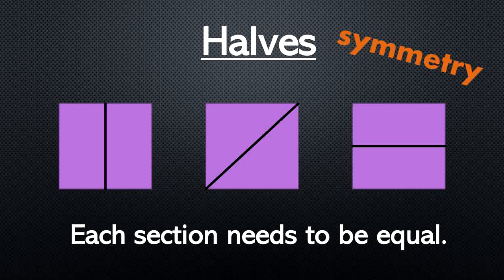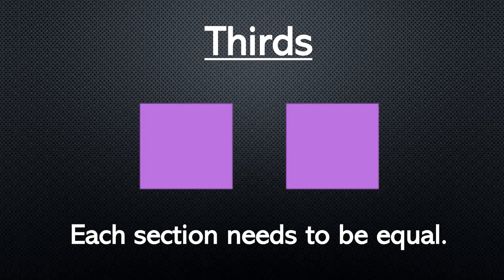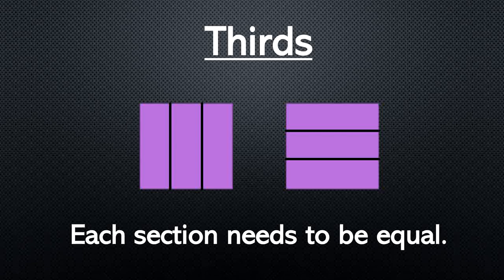Let's go on to thirds. What are some different ways that I can make thirds using a square? I can do two lines down from the top to the bottom — but remember, I need to space them out so each section is the same size. I can do the same thing just from side to side, just like I did with my halves. Now in each of my squares, I see three equal sections.